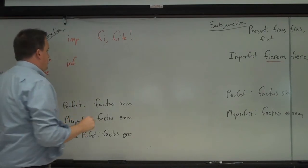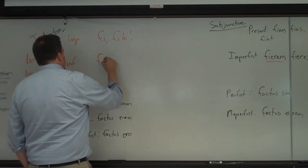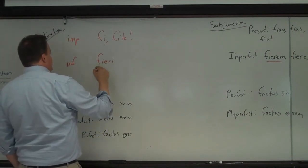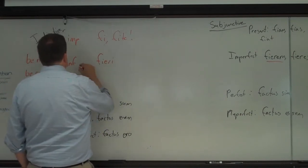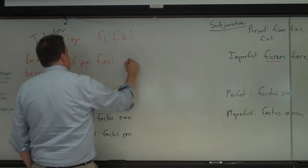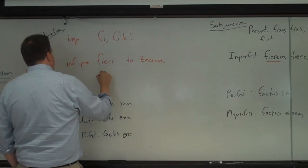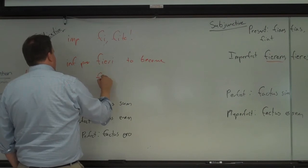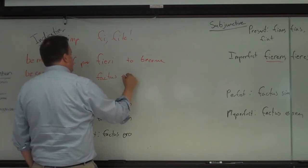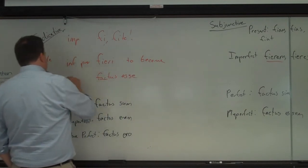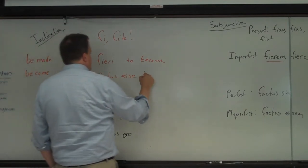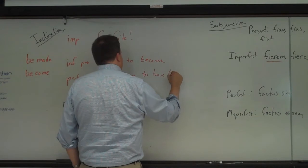Infinitives would be fieri, to become. That's the present infinitive. To become. And then the perfect infinitive would be factus esse, perfect. To have become.